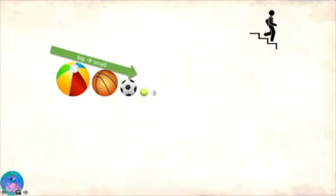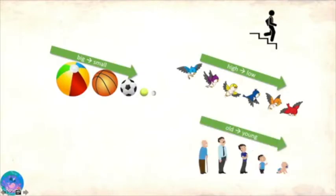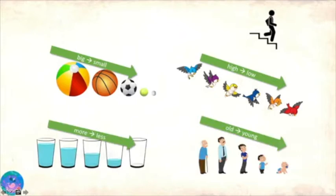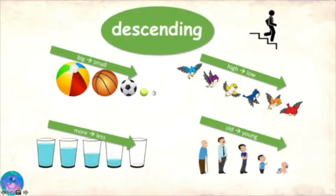When we are talking about going down as in big to small, high to low, old to young, more to less, then it is called the descending order. Da descending goes da down.